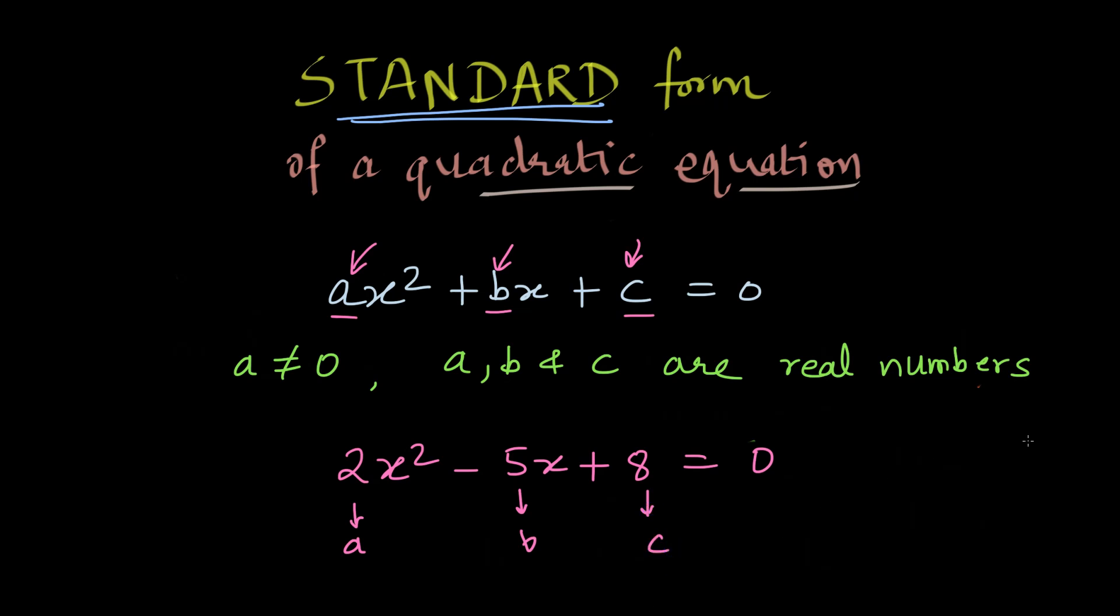Also, don't worry if either of b or c is 0. If say one of b or c is 0, you can still write something in the standard form without having to write the term that is 0. So for example, if say b was 0 in this case, our equation would still be in standard form if I had written 2x² + 8 = 0. This would just be c because the coefficient of x is 0. You can practice writing more quadratic equations in standard form and also keeping b or c equal to 0 and then rewriting them to practice more. See you soon.